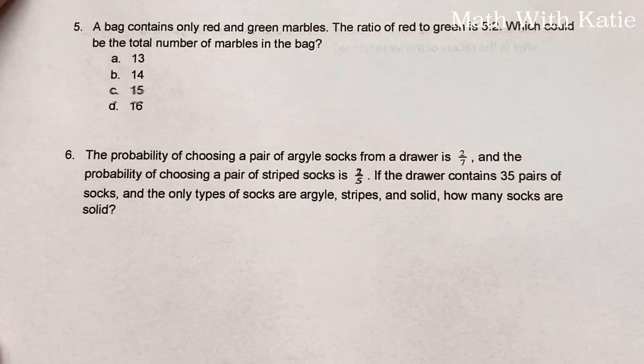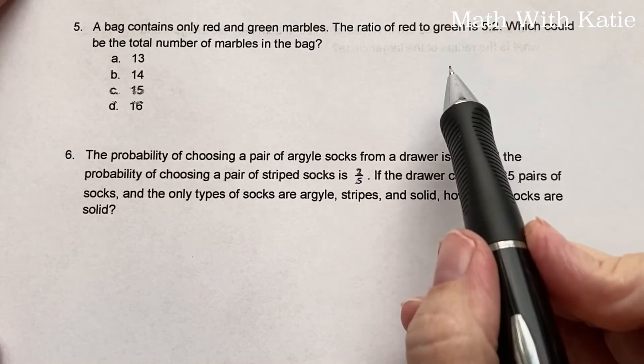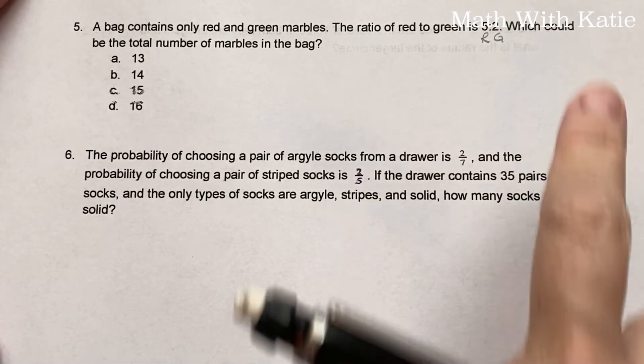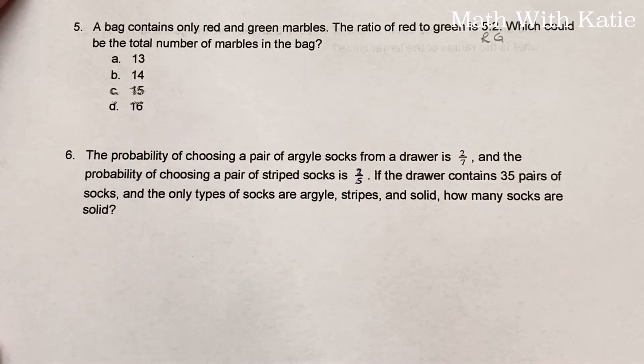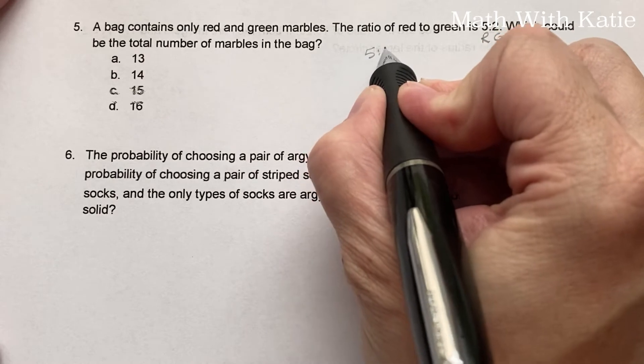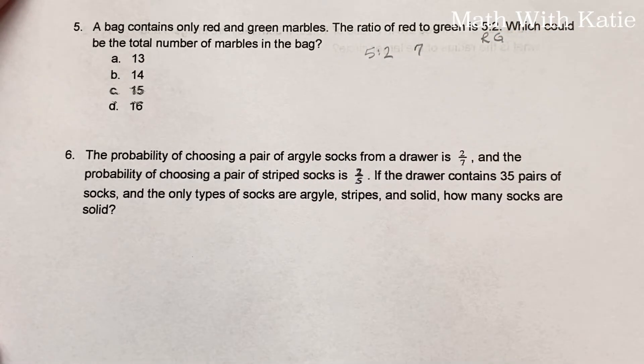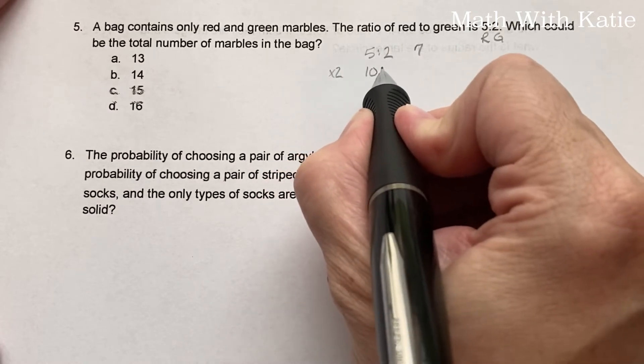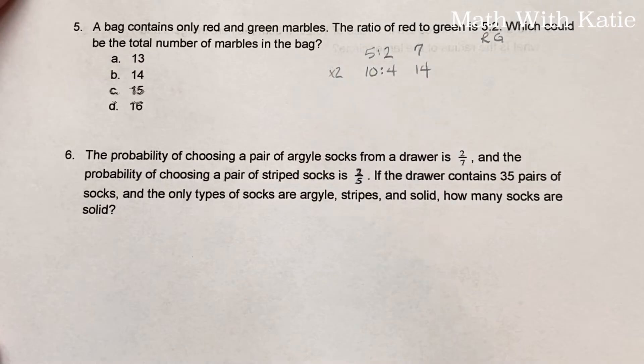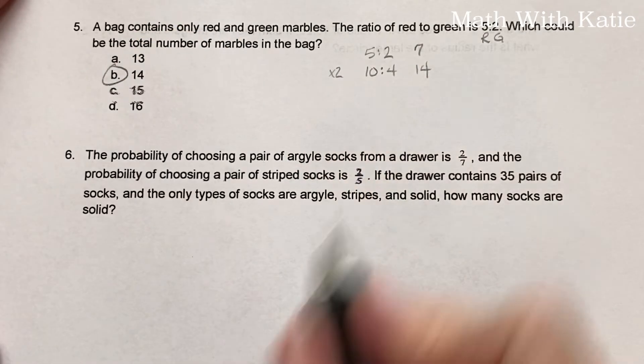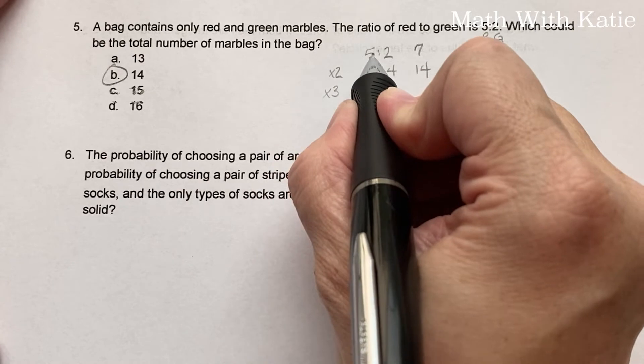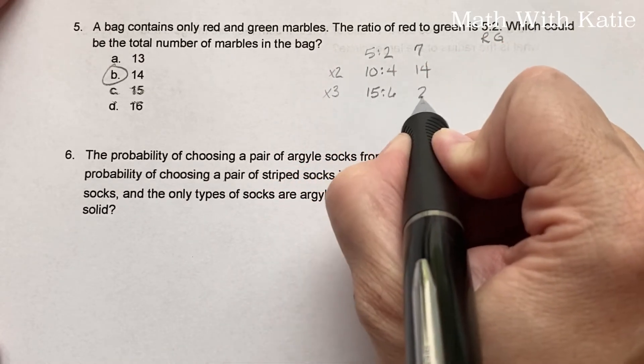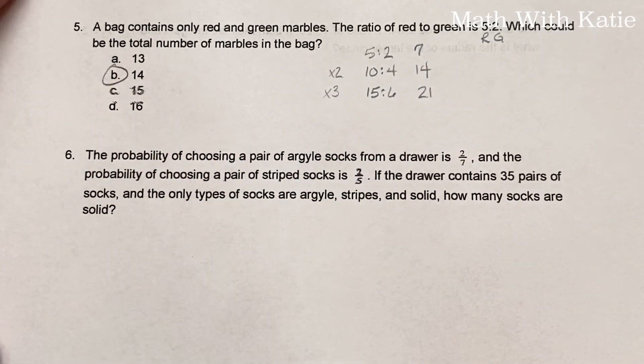A bag contains only red and green marbles. The ratio of red to green is 5 to 2. Which could be the total number of marbles in the bag? Well, as it stands right now, 5 to 2, that's a total of 7. We don't have that. Now let's multiply by 2. That'll give us 10 to 4, which gives us 14, which we have. Let's double check by multiplying by 3. 5 times 3 is 15, 2 times 3 is 6. Add those together, we get 21, and that's not there. So 14 is our only answer.